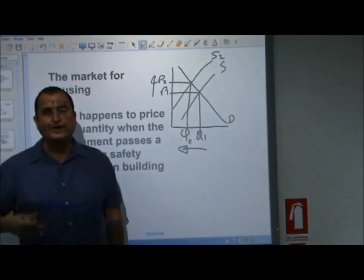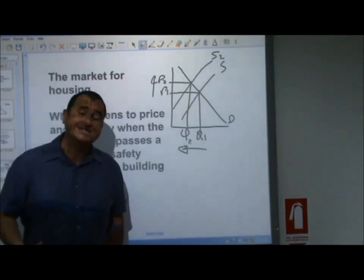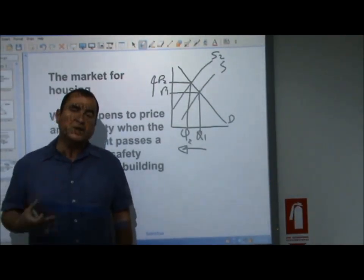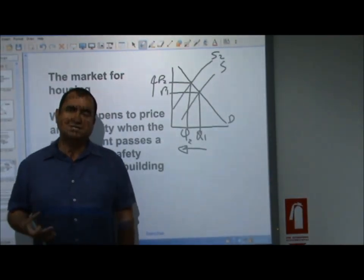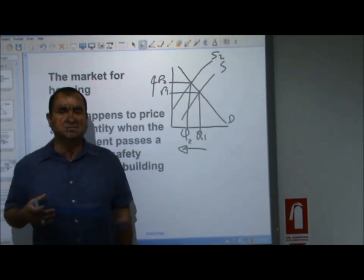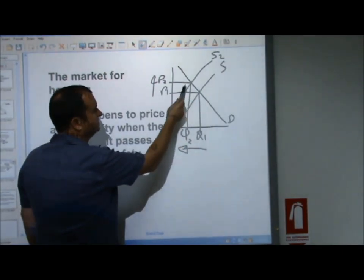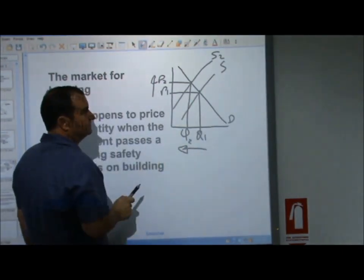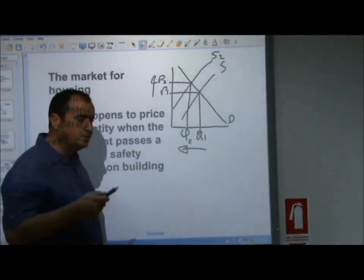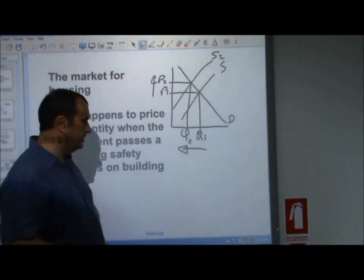Note in this example, demand did not change. The thing that happened was a supply-side event. There was a supply-side shock as rising costs of production had their effect. And it pushed the price up. And when the price went up, there was a fall in quantity demanded. We moved along the demand curve. The fall in supply caused a movement along the demand curve.